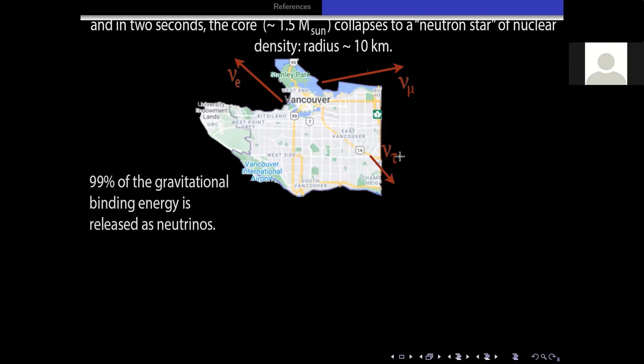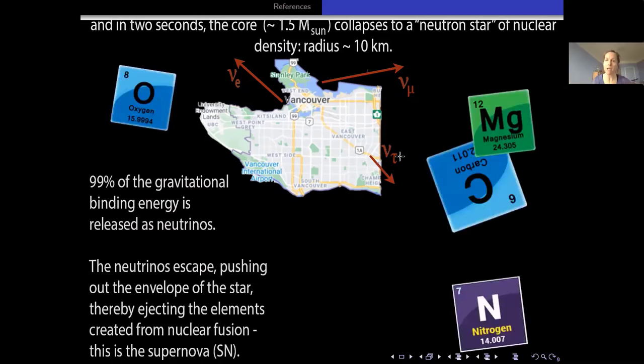These neutrinos, as they flee out from the collapsing core, push out the outer envelopes of the star. The collapsing star is like an onion with a compact iron core and layers of unfinished fusion products - hydrogen, helium, carbon, oxygen, and so forth. The neutrinos push out these elements, which is what you saw in the introductory slide. These elements become the building blocks of new objects.